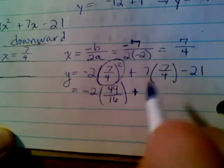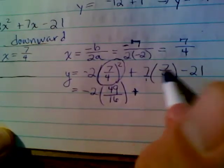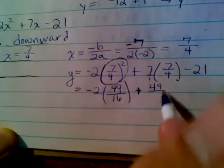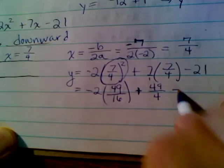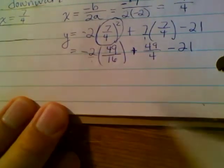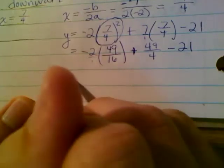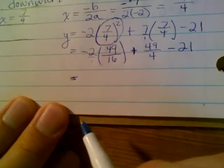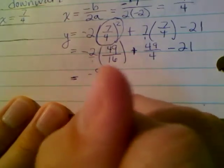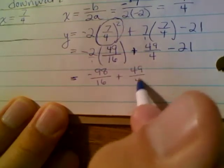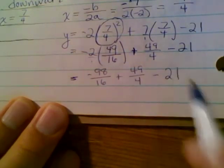Plus 7. Since that's 7, it's just 7 over 1. So multiply across the top, 49 over 4, minus 21. Since this negative 2 is up front, it's just like it's over 1. Negative 2 times 49. Negative 2 times 49, what's that? Negative 98, I think. Over 16 plus 49 over 4 minus 21. Now, I expect that a high school student really already knows how to add fractions.